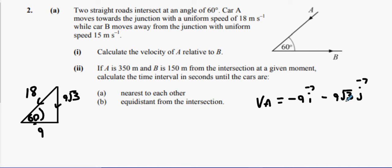B is moving away from the junction, so B is actually going to the right. So that's 15i. Happy days.